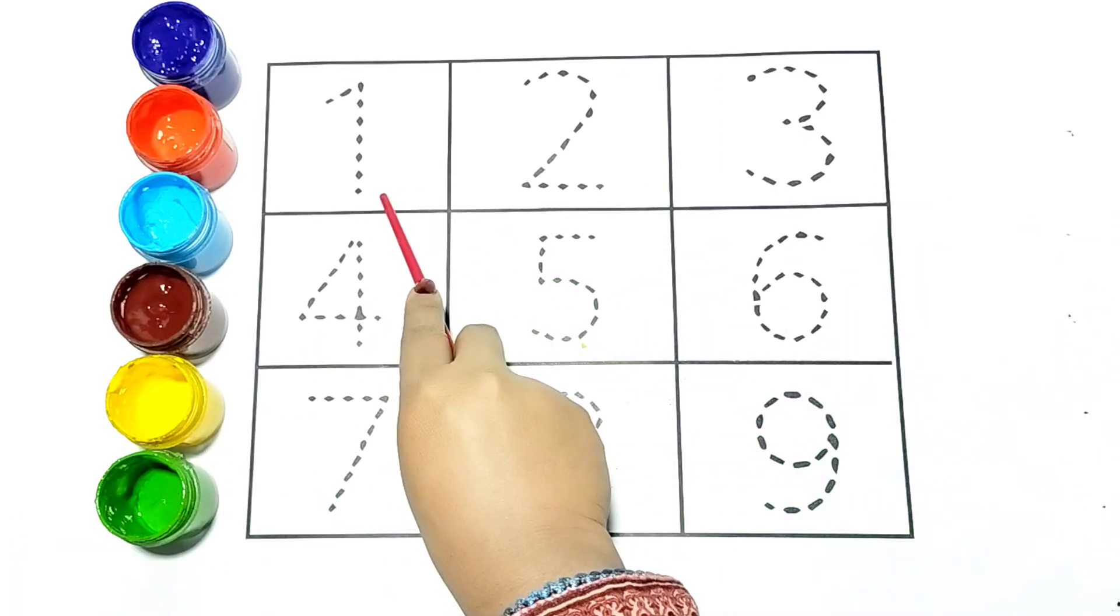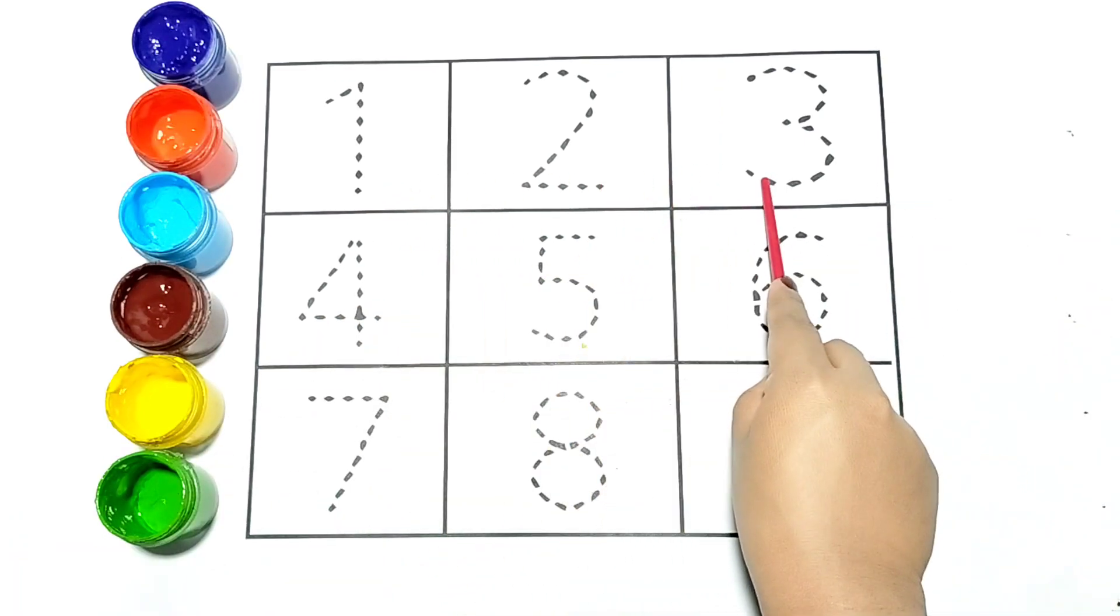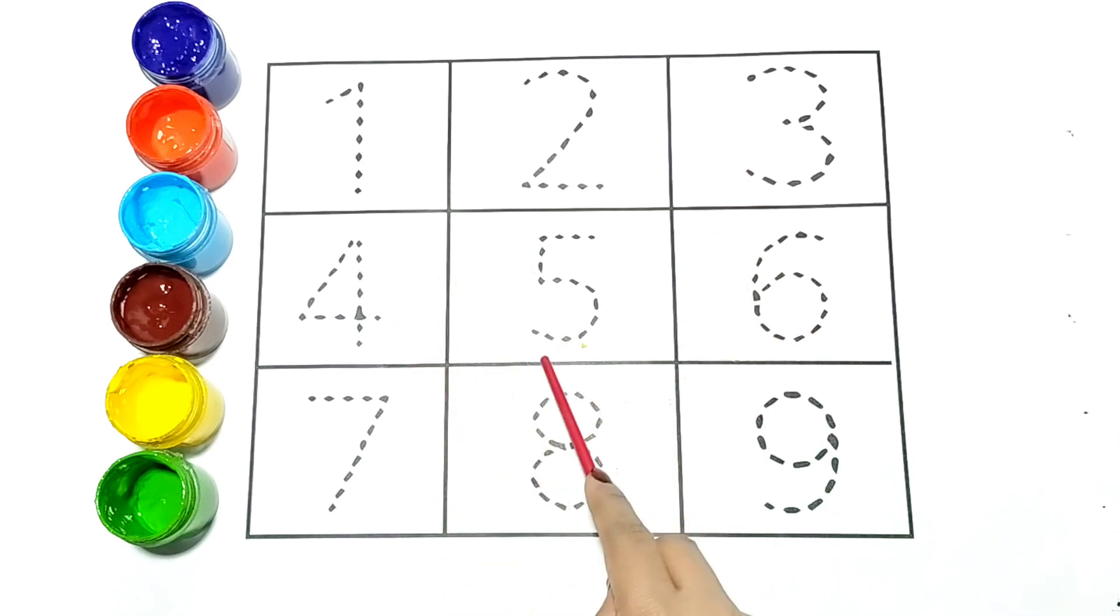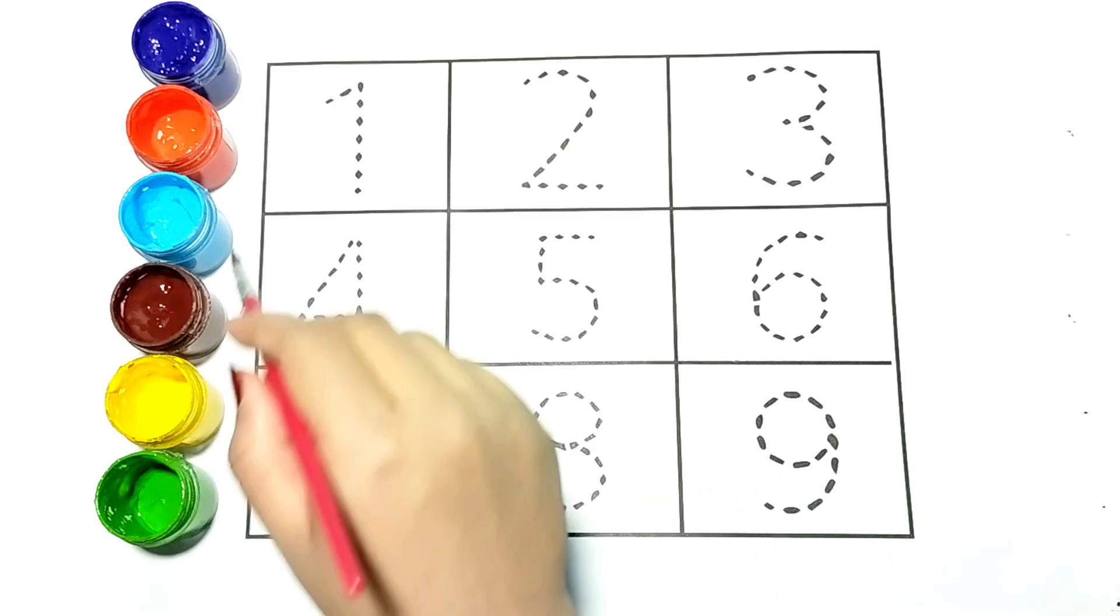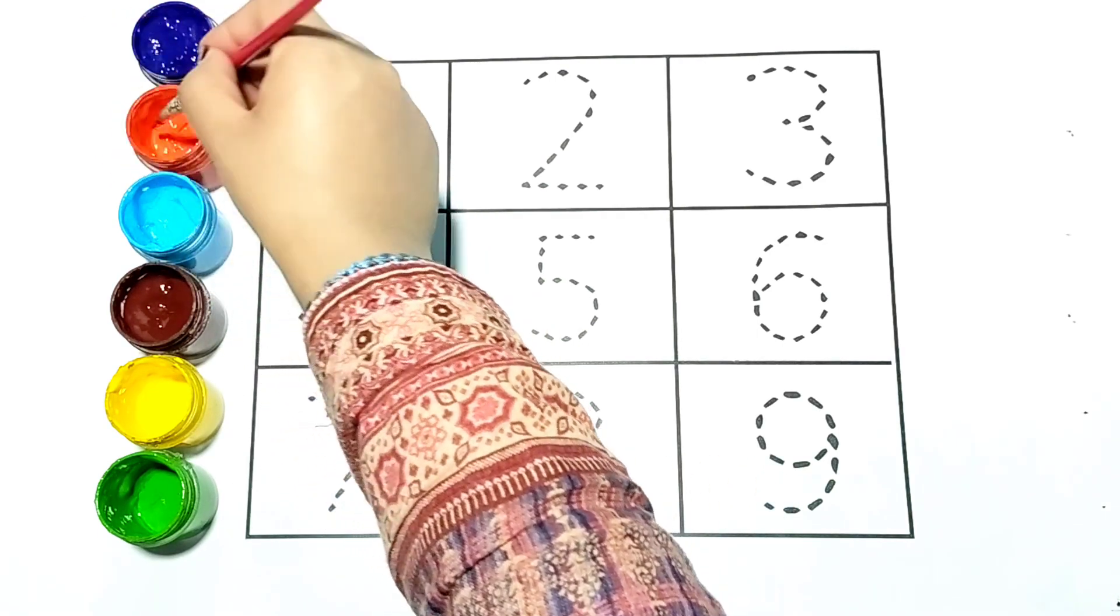1, 2, 3, 4, 5, 6, 7, 8, 9. Let's write the numbers with colors.